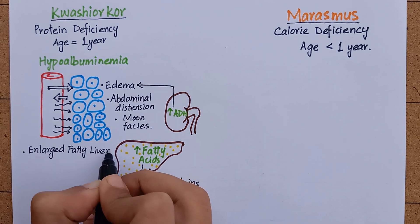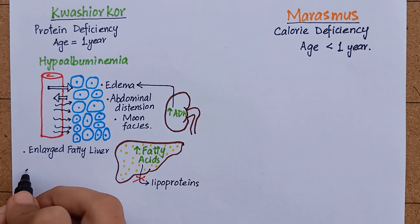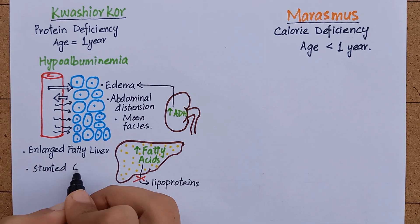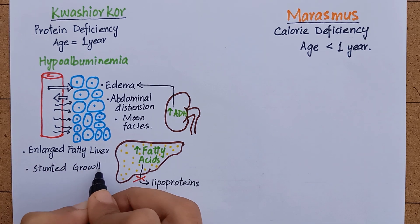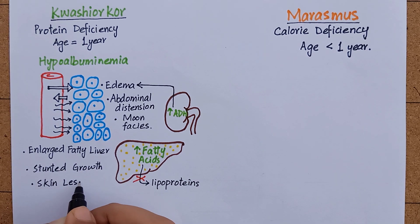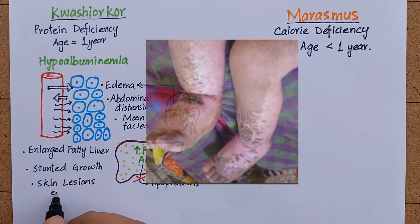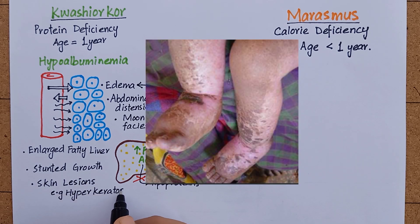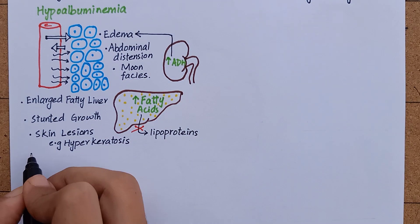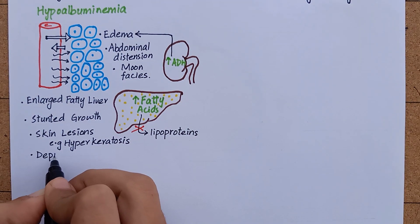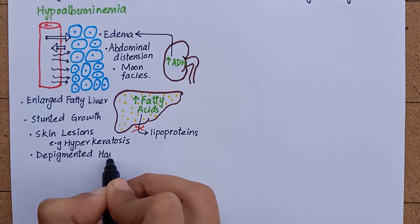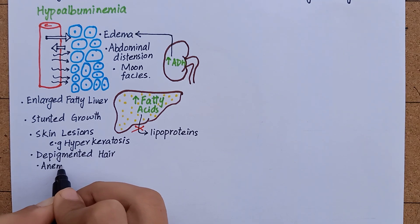Other signs and symptoms of kwashiorkor are stunted growth, skin lesions — for example, hyperkeratosis — depigmented hair that falls out easily, anemia, and anorexia.